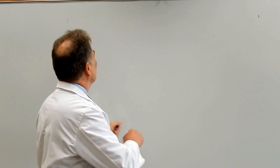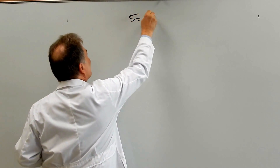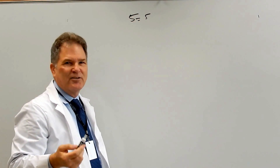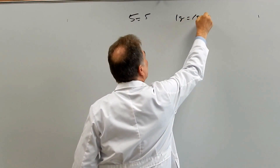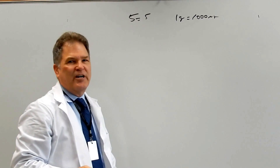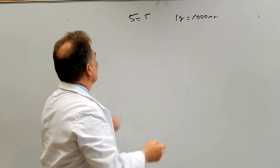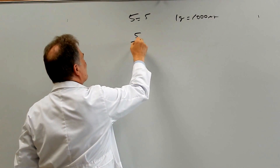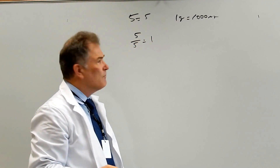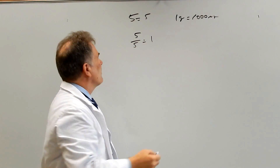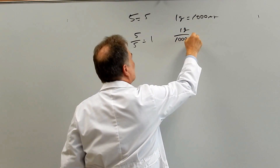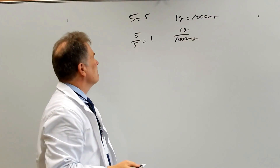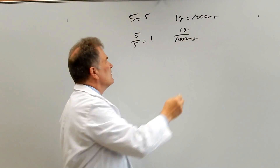You all know that 5 equals 5 — that's pretty basic. You also know that one gram equals a thousand milligrams. So what happens if we take 5 divided by 5? That equals 1. We can do the exact same thing with this equation: we can divide one gram by a thousand milligrams, and anything divided by itself is one.